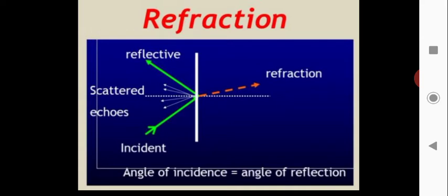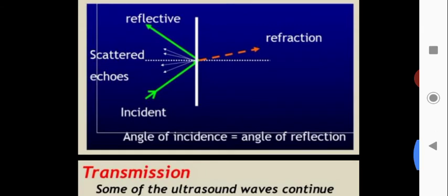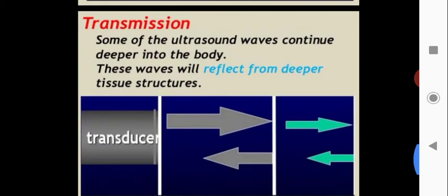Refraction means that some of the wave is refracted through the body at an interface. Transmission means some of the ultrasound waves continue deeper into the body and reflect from deeper tissue structures. The ultrasound waves reflect from deeper structures — the depth of penetration depends on the ultrasound frequency used, up to 12 MHz.